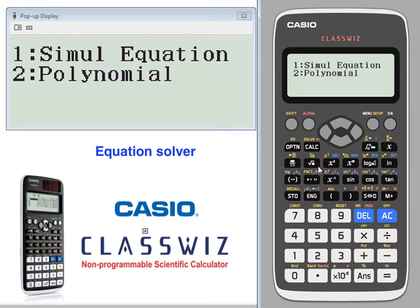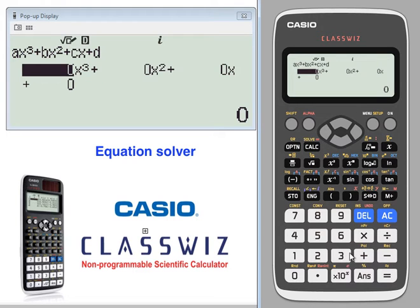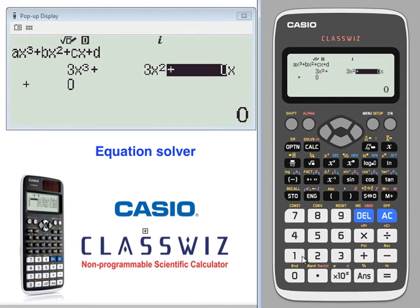To look at polynomials, press option and number two. We'll go with a polynomial of degree three with the following values: three, three, one, one, and zero.